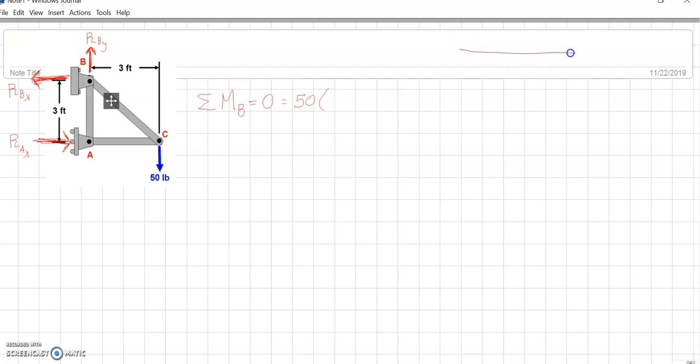Like when we had our teeter-totters, we had our first-class levers, right? So if we said this was 100 pounds of force, and this was 2 feet away, we said that the moment was equal to 100 times the 2 feet away, or 200 foot-pounds.